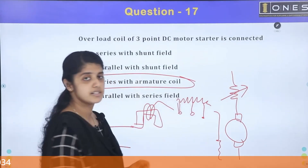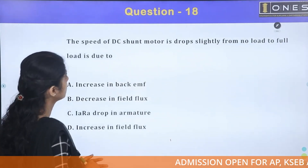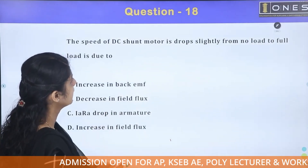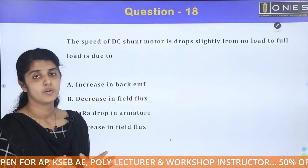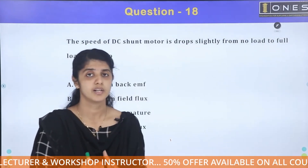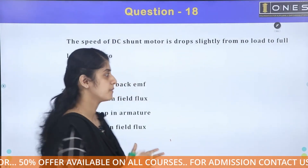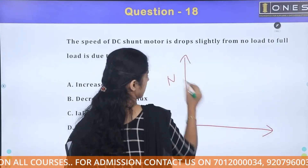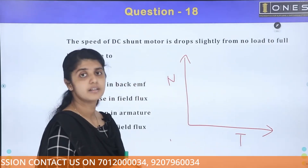The next question: the speed of a DC shunt motor drops slightly from no load to full load. This is because the DC shunt motor is typically used as a constant speed motor, and its speed-versus-current characteristic is nearly constant.